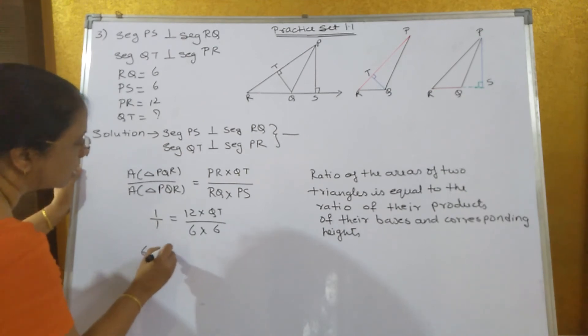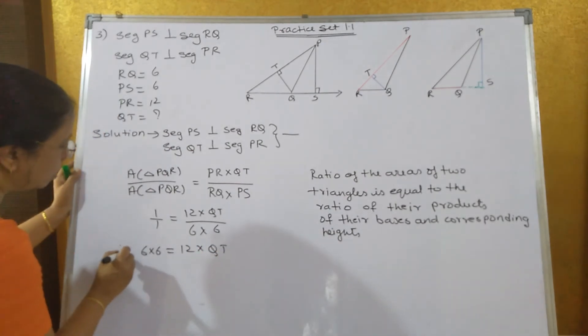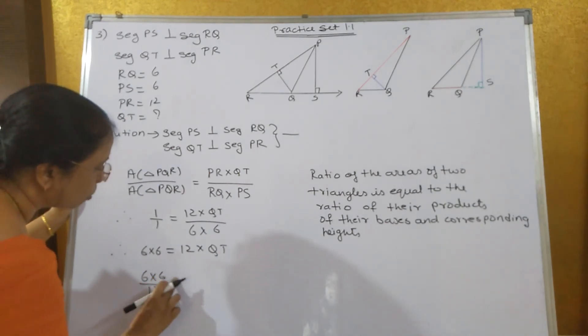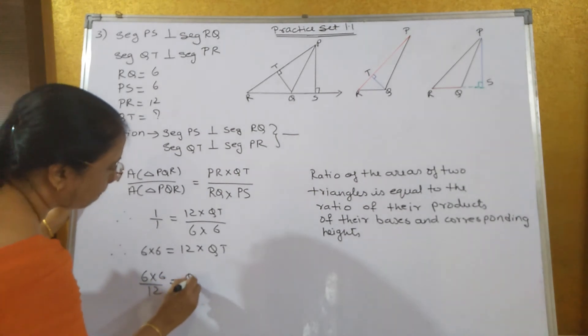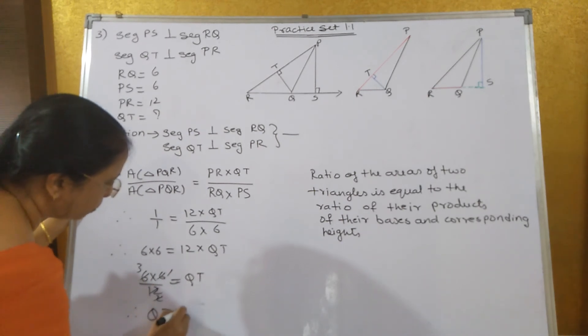Now take the 6 and 6 into 6 on the other side, so 6 into 6 is equal to 12 into QT. Now keep the QT here and bring the 12 over this side, so what you will get: 6 into 6 upon 12 is equal to QT. 6 ones are 6, 2s are 2, therefore QT is equal to 3 units.